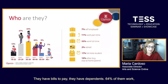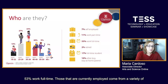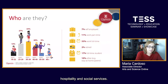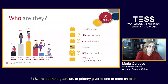The survey also informed us that students have a variety of responsibilities. They have bills to pay and dependents. 64% of them work, and 53% work full-time. Those currently employed come from a variety of industries such as education, healthcare, government, hospitality, and social services. 37% are a parent, guardian, or primary caregiver to one or more children.